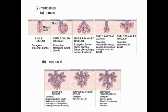Moving to compound glands, they are essentially larger and have many more cells that produce a product. They can be tubular or alveolar, and in this case you have the highest ability to produce a product. Many acini dump into ducts that come together and converge into one large duct. These are classic multi-cellular glands found in complex organisms like ourselves.